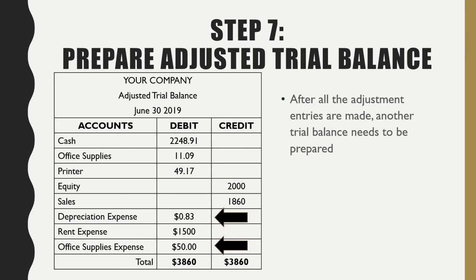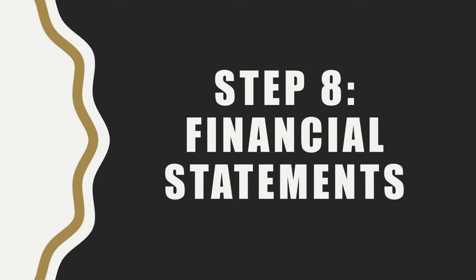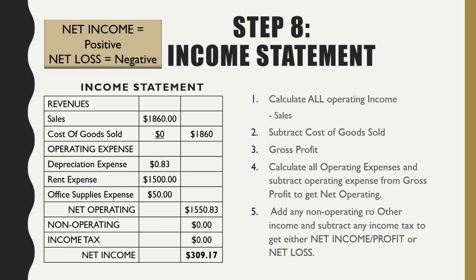The adjusted trial balance is very key and important because it's ultimately what you'll use to create your financial statements. If you don't have your adjusted trial balance, you won't be able to complete anything else. These are the numbers you'll be piecing your financial statements together with. The financial statements have to go in a particular order — you need to complete your income statement first.